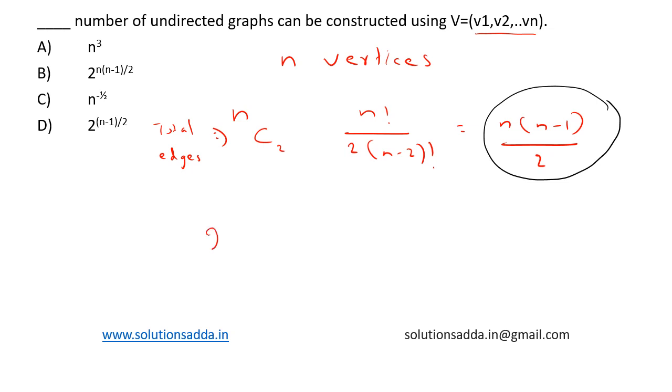So for n edges, we can have 2 to the power n into n minus 1 by 2. The correct answer is option B: 2 raised to n into n minus 1 by 2.